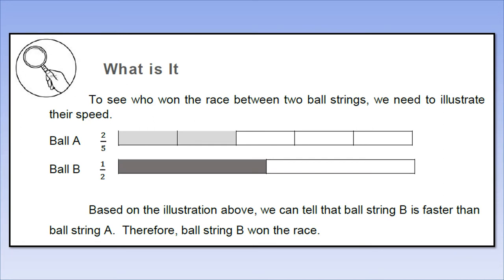Fraction strips represent the fractions in the situation. There's ball string A and ball string B. Ball string A runs at 2/5 kilometers per hour, while ball string B runs at 1/2 kilometers per hour. We will create fraction strips from these two fractions. To see who won the race, we need to illustrate their speed. Ball A has 2/5 fraction and ball B has 1/2 fraction. In the fraction strip of ball A, the rectangle is divided into 5 because the denominator of 2/5 is 5. The shaded part is two because the numerator is two. In ball B, it's divided into two and shaded in one.